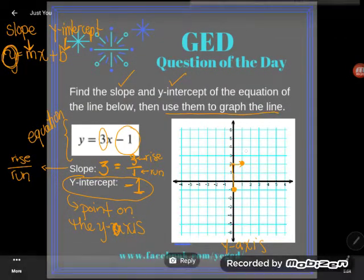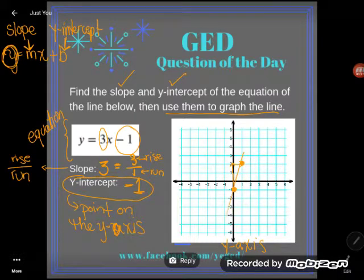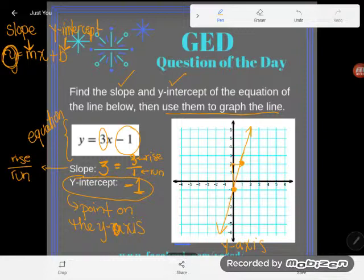And now two dots are all I need to make a line. You just connect these two points here and boom, I have a line. I have graphed my line using the slope and the y-intercept.